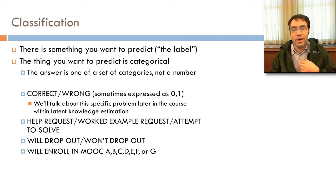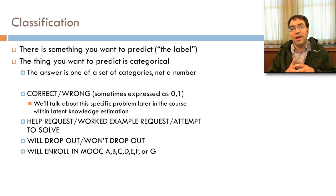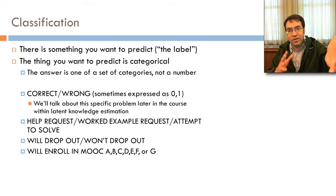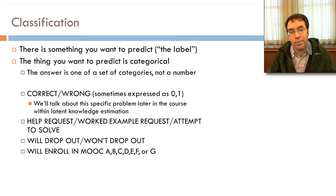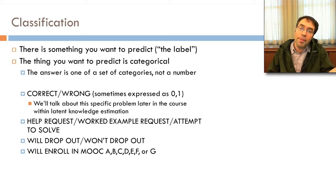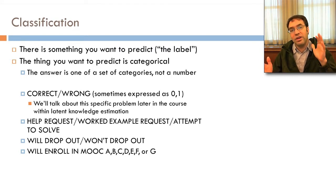For example, it could be correct or wrong, which is actually the special case of latent knowledge estimation. It could be: did the student make a help request, make a worked example request, or attempt to solve the problem with no help? It could be: will the student drop out or not? Or it could be: will the student enroll in MOOC A, B, C, D, E, F, or G?